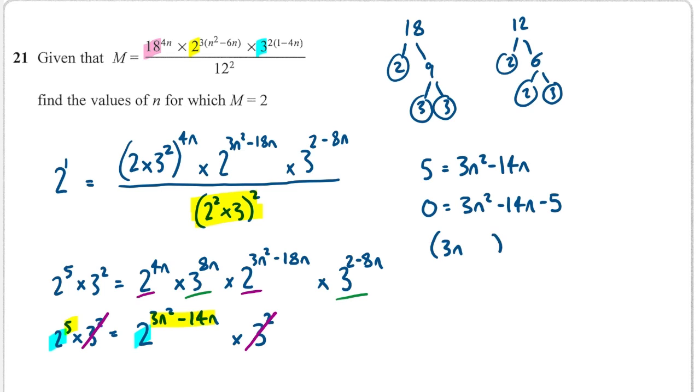And I can solve that quadratic by factorizing. So it's going to be a 3n and an n. And my factors need to multiply to make 5. So I'm going to want minus 5 over here, because that's going to make minus 15. And then plus 1 here, and that will make minus 14 in the middle. And I factorized that perfectly. So that tells me that either 3n plus 1 equals 0, or n minus 5 equals 0. So therefore, 3n equals minus 1. So n equals minus 1 third, or n is equal to 5. And those are the values of n for which this question works.